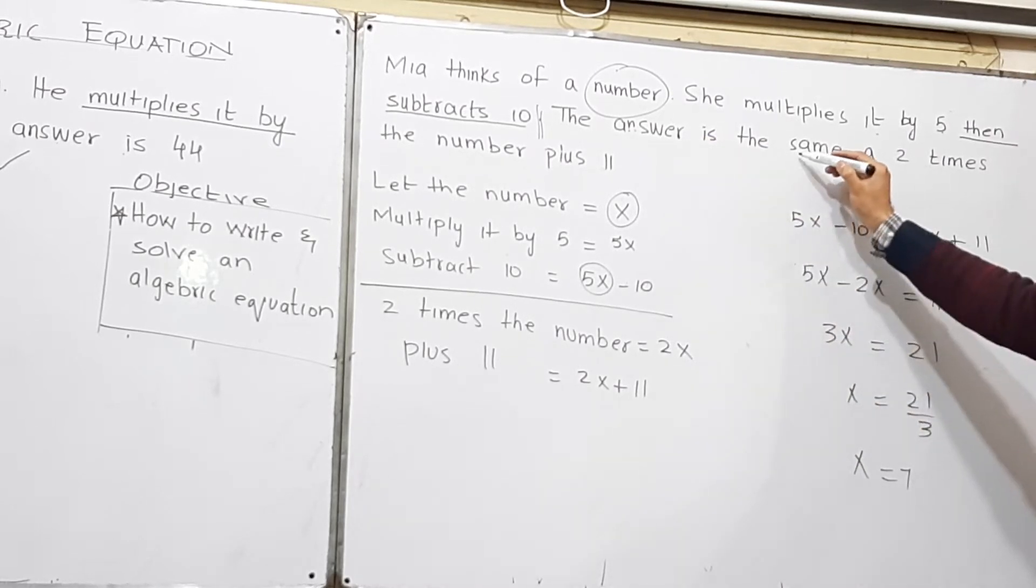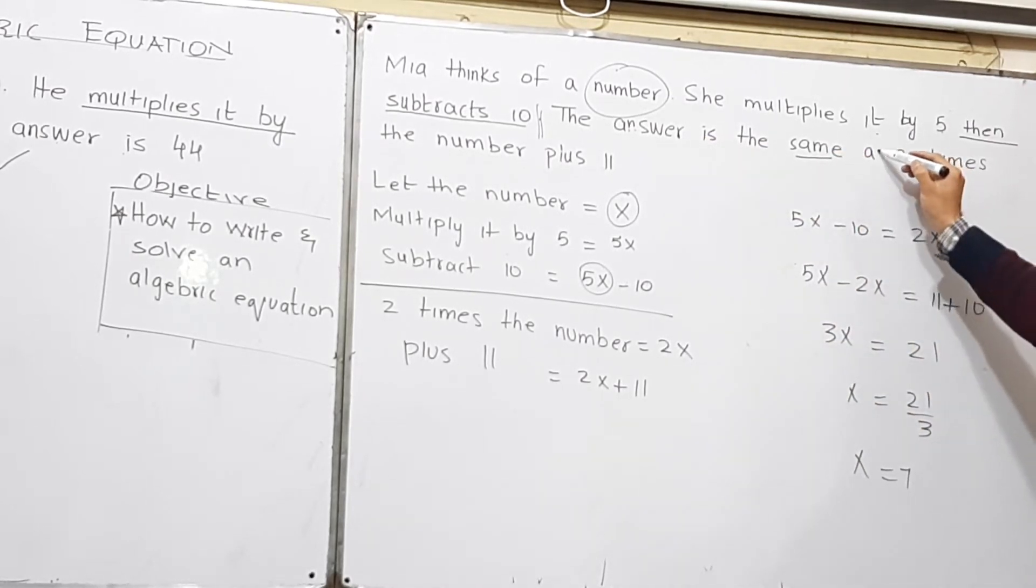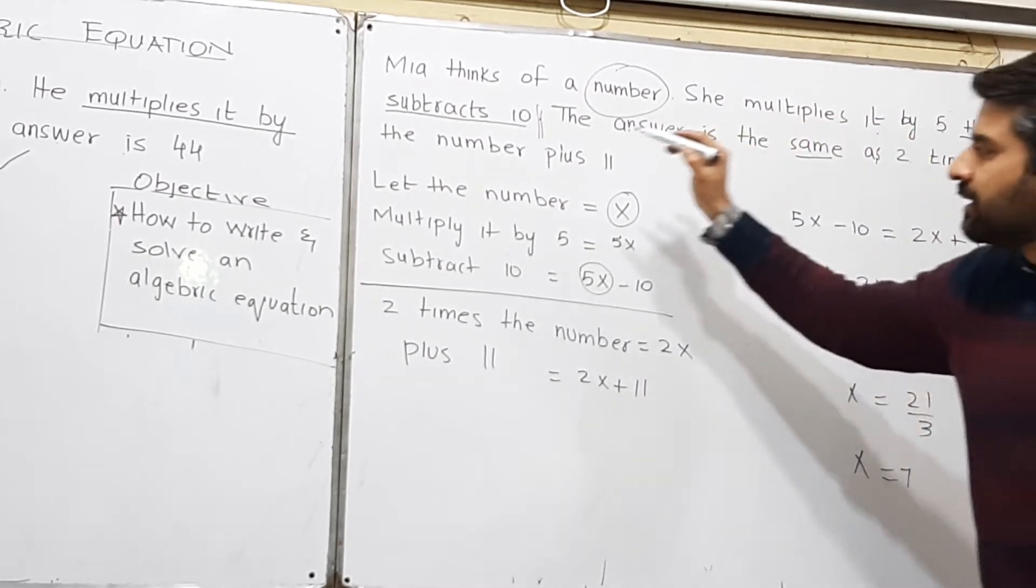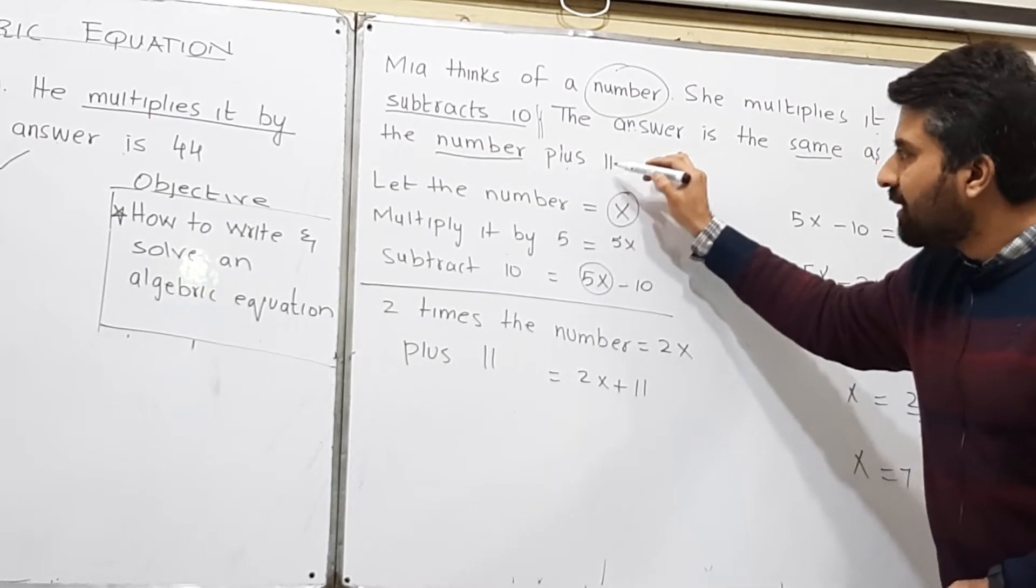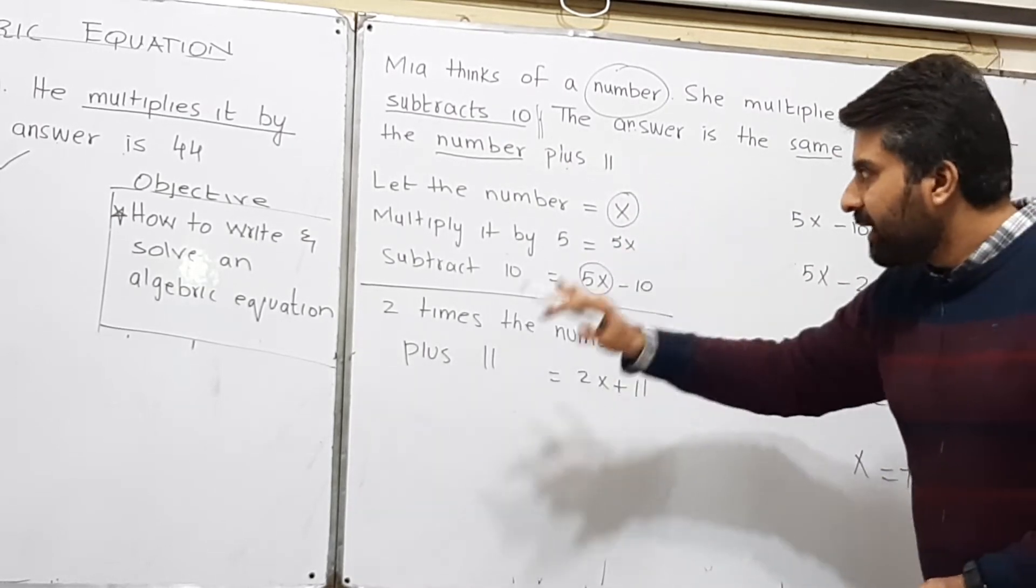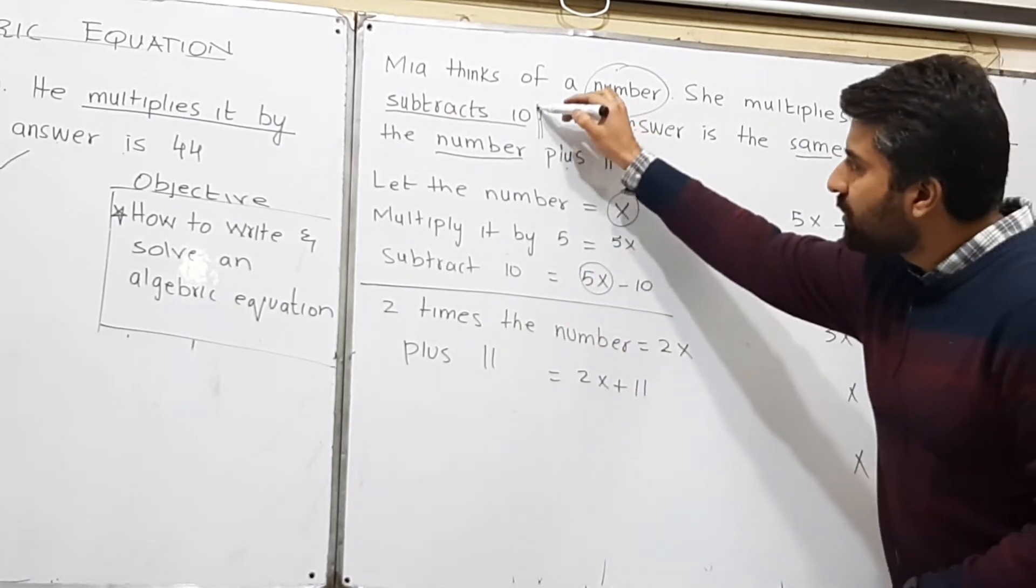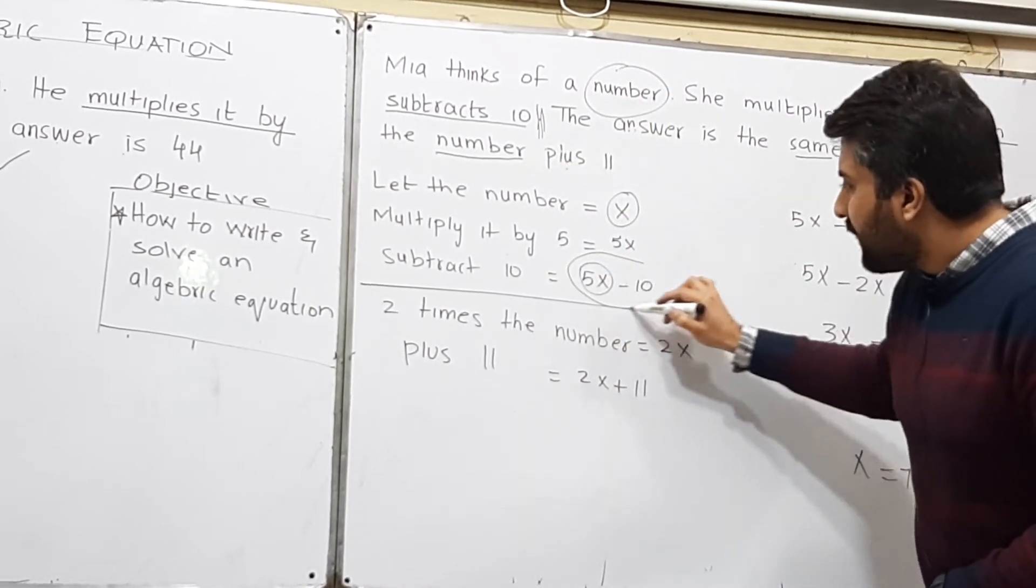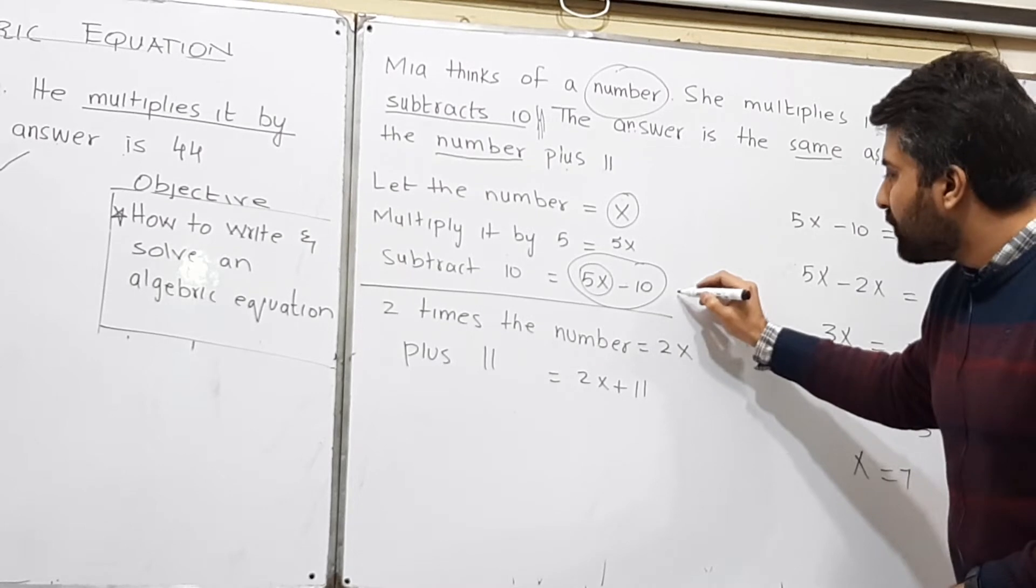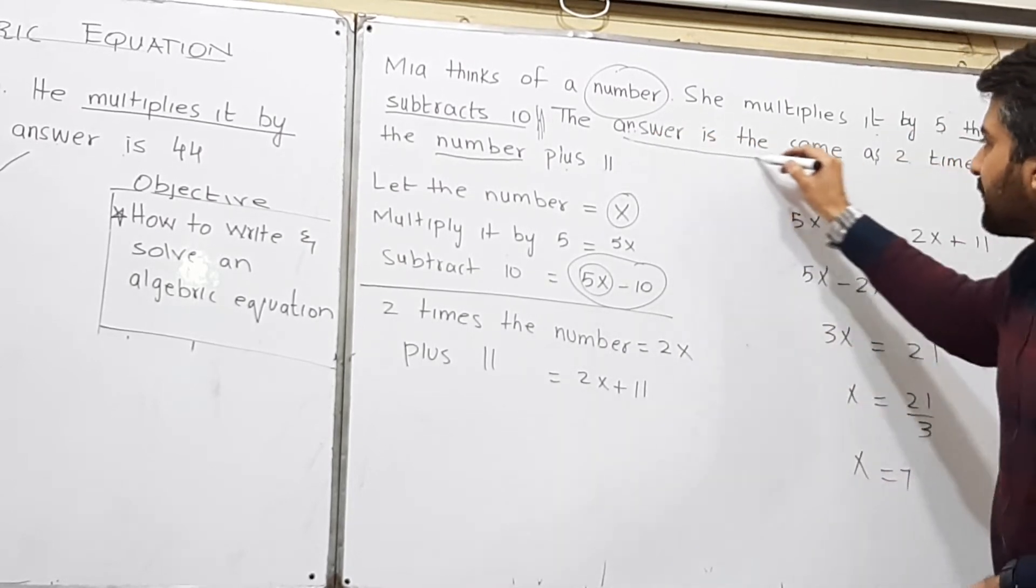The answer is the same as 2 times the number plus 11. The second part is that we have solved up to this part. This one will be equal to this second part.